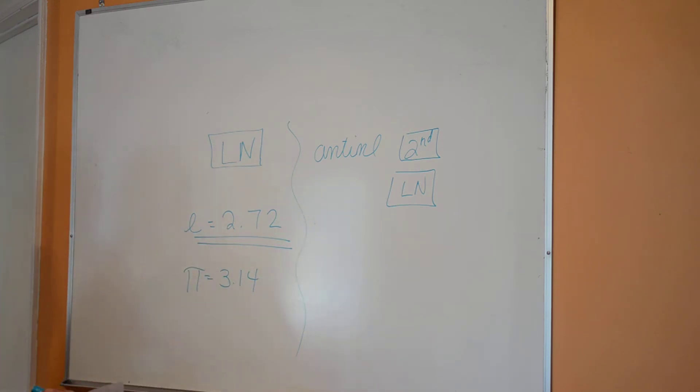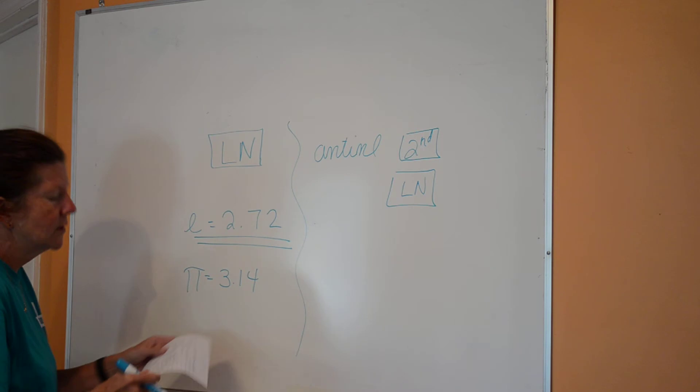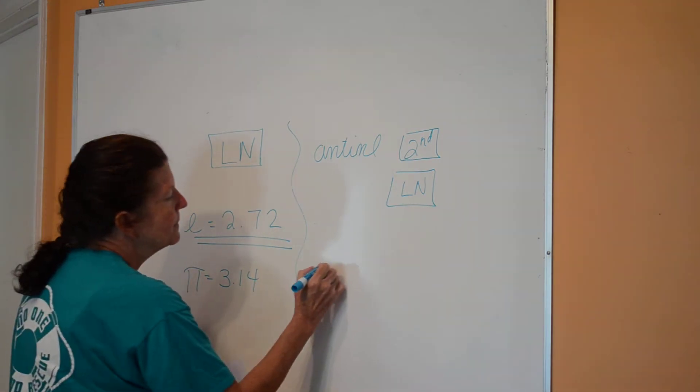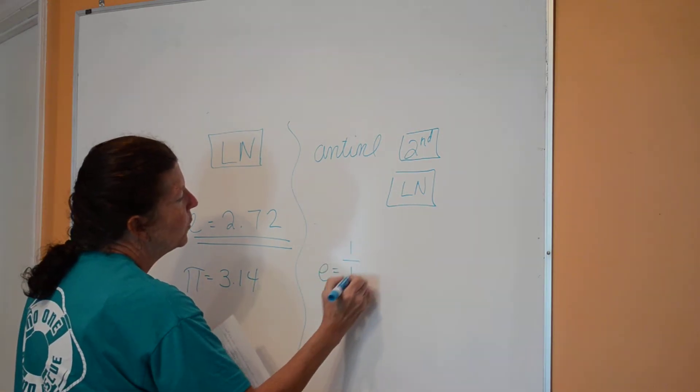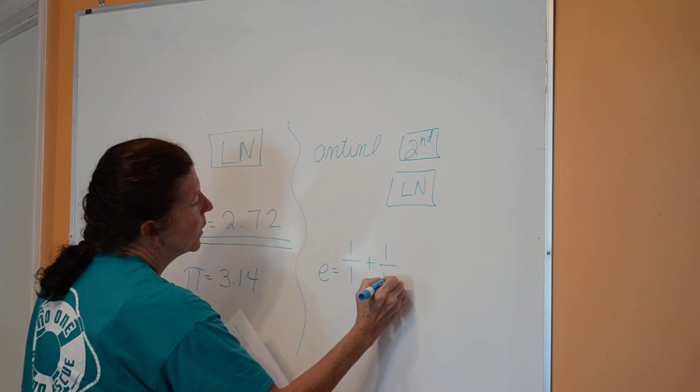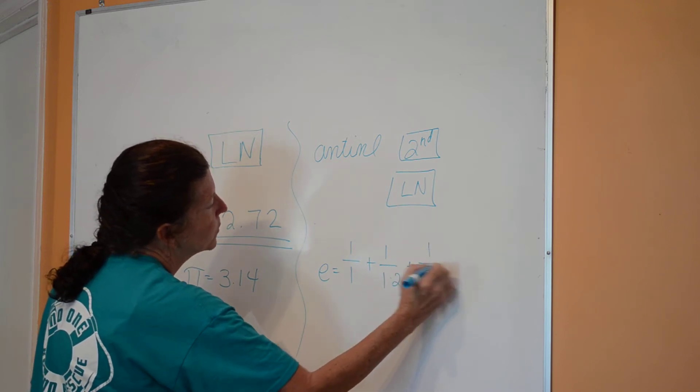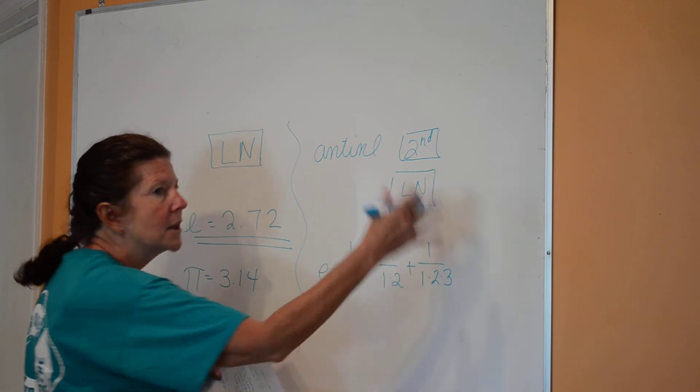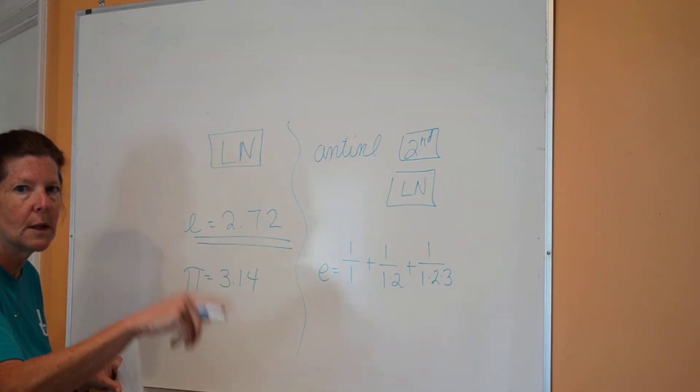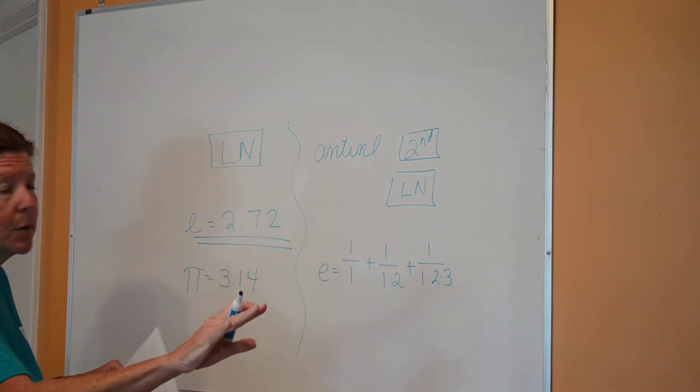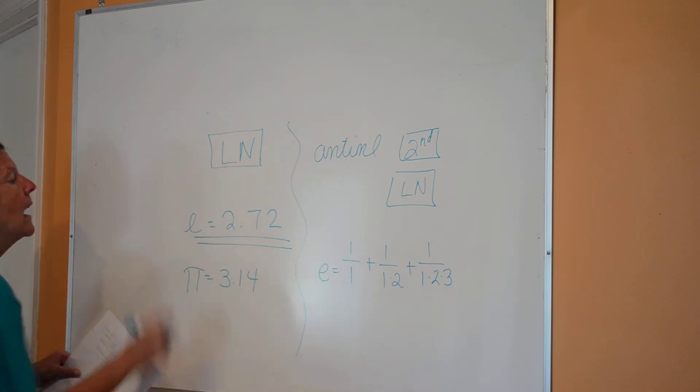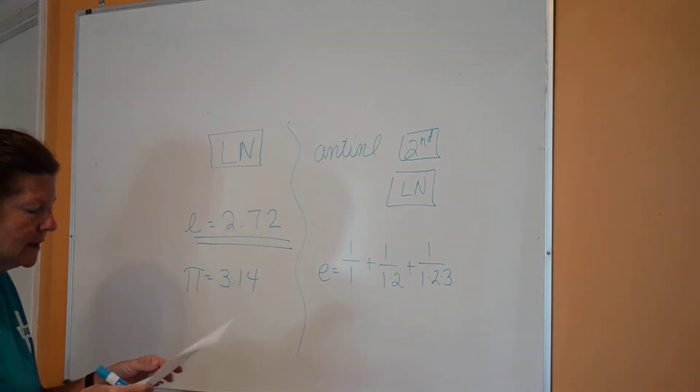And if you just want to know how that value is derived, e is basically equal to 1 over 1, plus 1 over 1 times 2, plus 1 over 1 times 2 times 3, plus 1 over 1 times 2 times 3 times 4. And you can see how it would never end. But that's the value for e is 2.72.